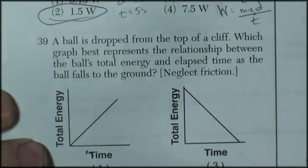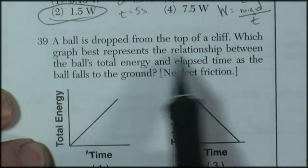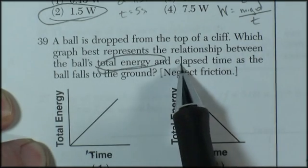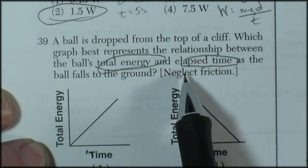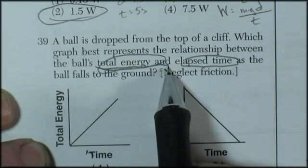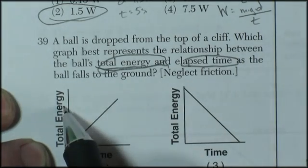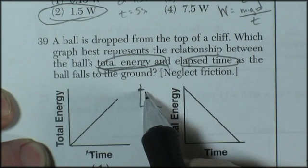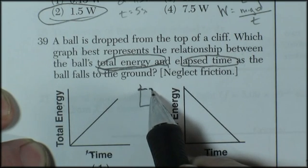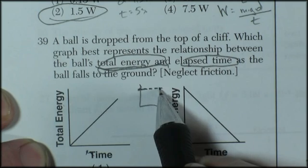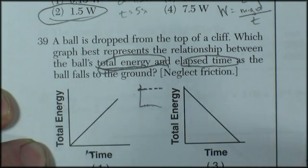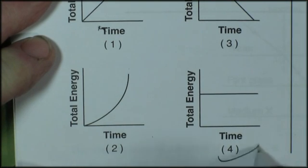Question 39. A ball is dropped from the top of a cliff. Which graph best represents the relationship between the ball's total energy and time as the ball falls? Kind of a trick question because the total energy of a system remains constant. So total energy, if I was going to lose potential but gain kinetic, lose more potential, gain more kinetic. And I'm looking for a graph where the total energy stays the same as a function of time. And I find that in Option 4.